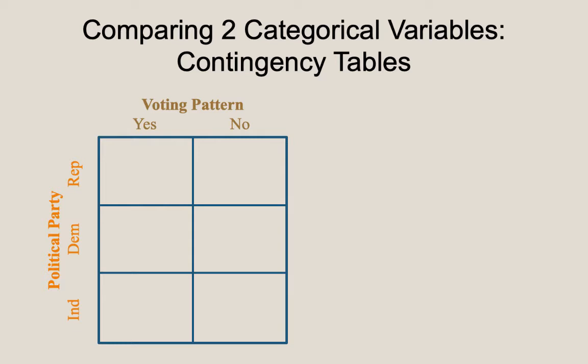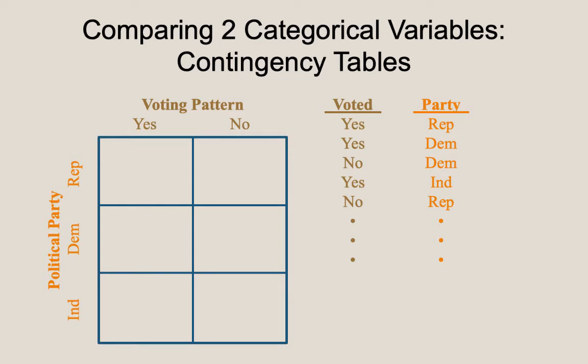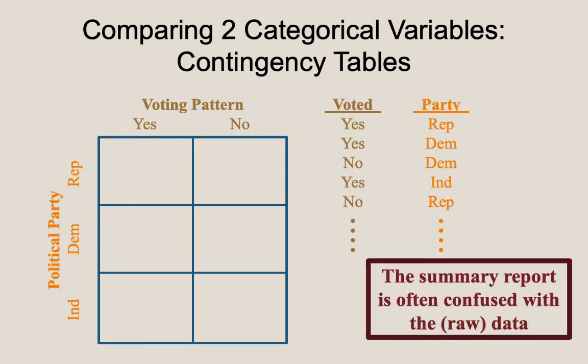One interactive textbook problem that commonly gives students trouble is demo number 6-2. This question presents the summary of the data as a contingency table and asks students to reconstruct what the raw data might have looked like. If we were to do that here, our raw data would have two columns, one for each variable, and the number of rows would be the total sample size — the sum of the frequencies in the contingency table. One key point to note is that when you have data summarized in a contingency table, it is just that — a summary report, not the raw data.